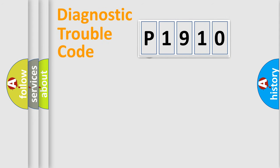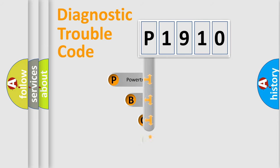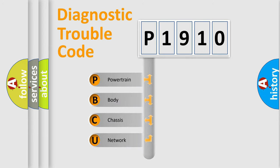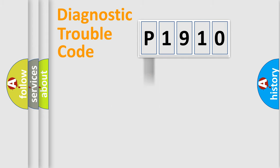Let's look at the history of diagnostic fault code composition according to the OBD2 protocol, which is unified for all automakers since 2000. We divide the electric system of the automobile into four basic units: Powertrain, Body, Chassis, and Network. This distribution is defined in the first character of the code.